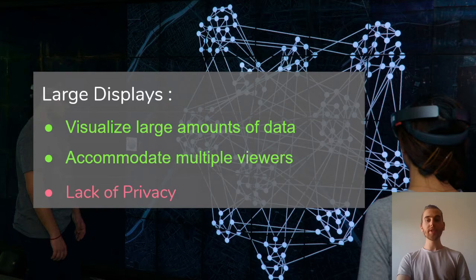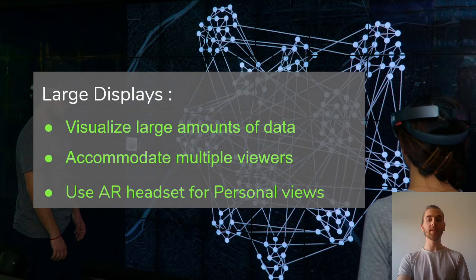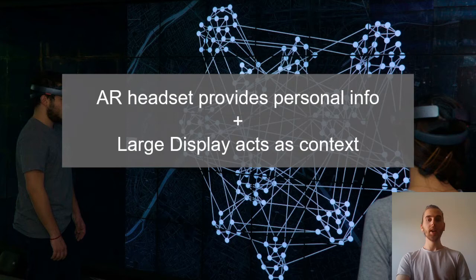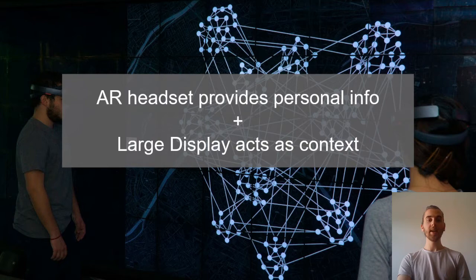However, they suffer from some drawbacks, such as the lack of privacy, as the content on the wall is visible to all users. We suggest combining large displays with augmented reality headsets that can show personal information. The addition of personal augmented headsets can provide a space to see and interact with personal information, which is directly superimposed on the large display that acts as a context, and is eyes-free.